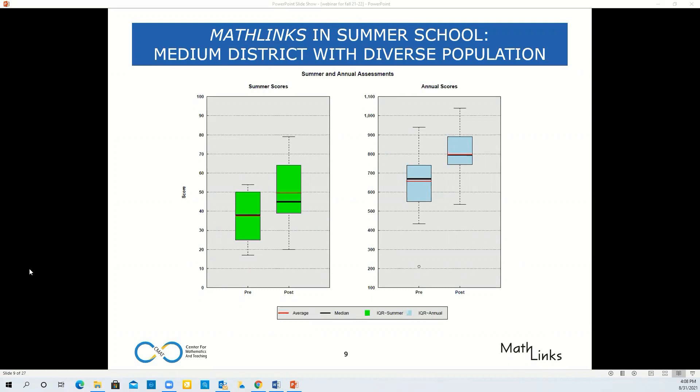Interestingly, those scores increased too, as the box plots on the right show. In other words, there was growth with topics that weren't even addressed that summer. Now, the teachers attribute this unanticipated outcome to a more positive student disposition toward mathematics after having done MathLinks work. While I definitely agree, I worked with these teachers personally in professional development, and I can tell you for sure that their positive disposition contributed in a big way to this success too.